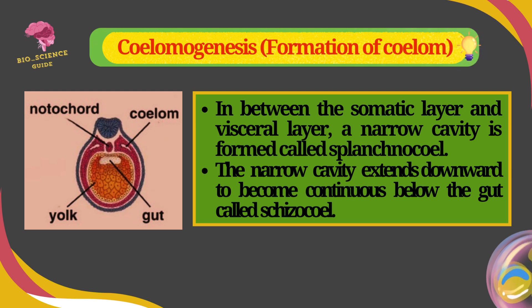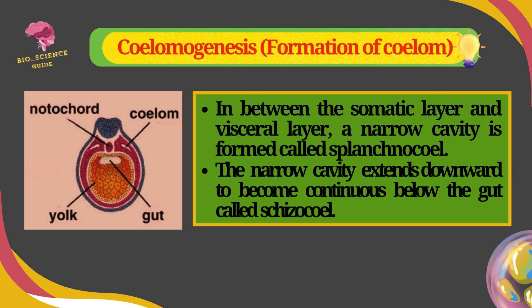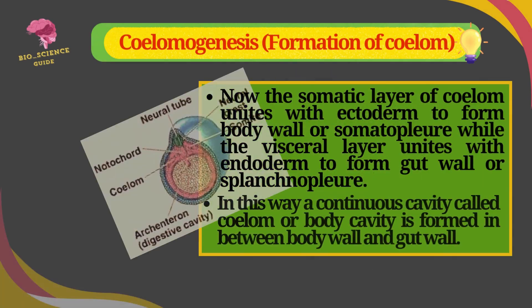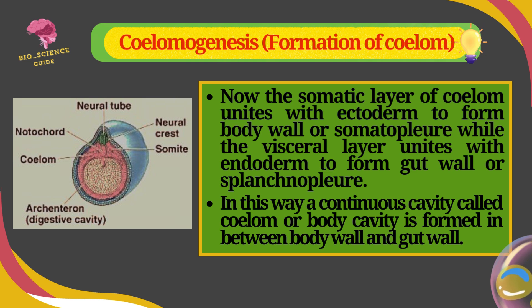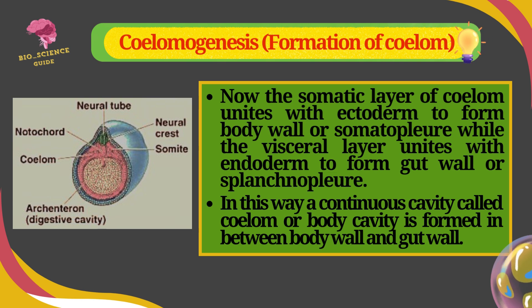The narrow cavity, splanchnocoil, extends downward and continues below the gut, called the aesthesiocoil. The somatic layer of Coelom unites with endoderm to form the body wall or somatopleure, and the visceral layer unites with endoderm to form the gut wall or splanchnopleure.